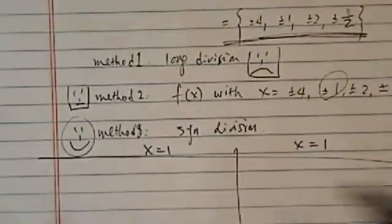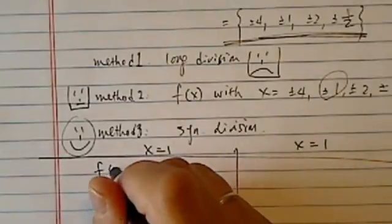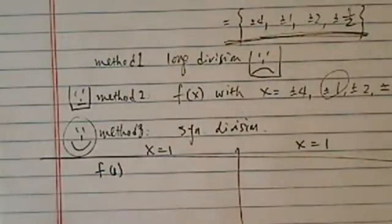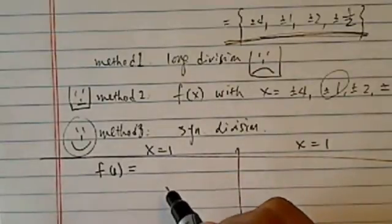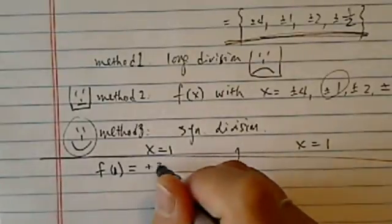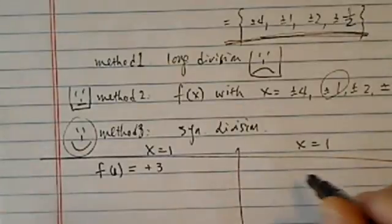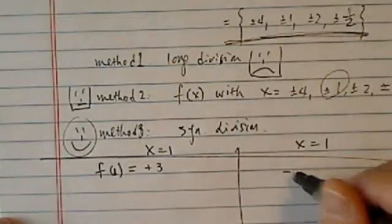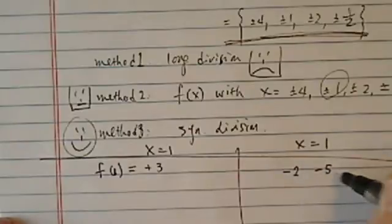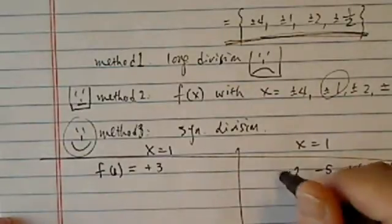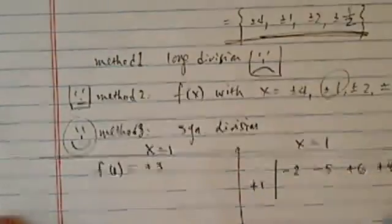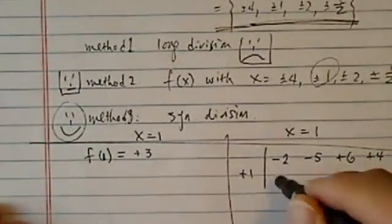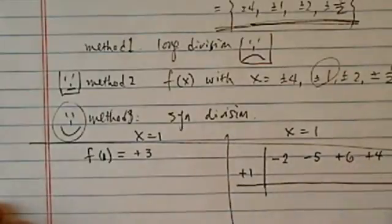So I'll see if x equal to 1. If it's f of 1, if it's equal to 0, then that means it's a root for this polynomial. Unfortunately, f of 1, if you plug in there, I end up with a positive 3. Using synthetic division, hopefully you know how to do this one. If you don't, go on my channel and type in synthetic division. There should be a video there.